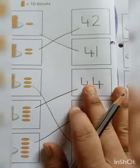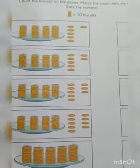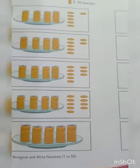Once this page is done, you will do the next page. Here also the biscuits are given. Now you know how to count. You will do it on your own. You will trace the number and match it with the correct box.